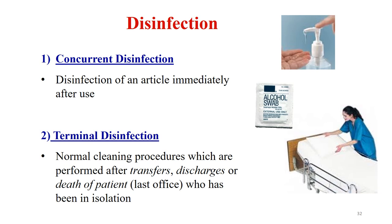There are two types of disinfection: concurrent disinfection and terminal disinfection. Concurrent disinfection is an immediate process - if you see any contaminated items, for example bed linen contaminated with blood, vomit, or urine, you immediately disinfect these items. It is immediate disinfection after use. Terminal disinfection is carried out at a convenient time - for example, after the patient has been transferred to another ward, cured and discharged, or has died. Terminal disinfection is done at the end when the patient is no longer the source of infection.